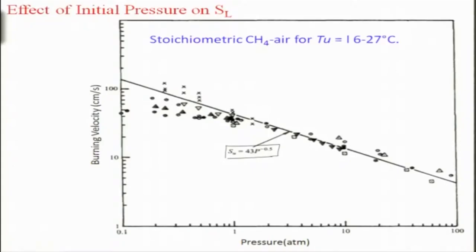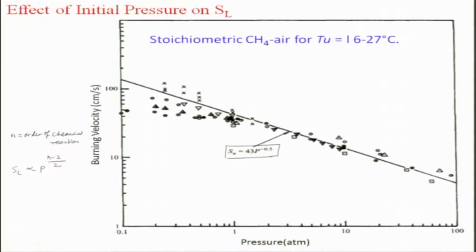We have seen that S_L is proportional to P to the power (n minus 2) divided by 2, where n is the order of chemical reaction. In multi-step chemistry, which mimics the actual situation, the reaction order depends on each individual reaction, but if you look at it in a global sense, it will vary from one fuel-air system to another and also depend on pressure. This is valid only for stoichiometric methane-air and within the range in which the experiments are done — it would not be valid for all other cases. This is known as a semi-empirical relationship because it is not generalized; it is not from theory but from experiment.